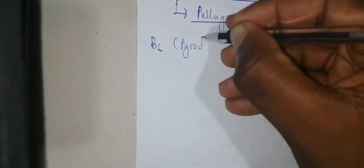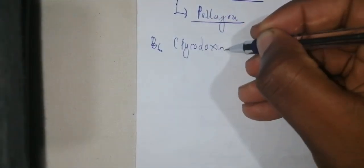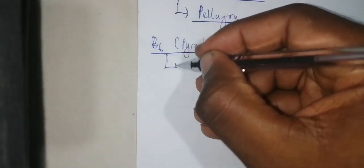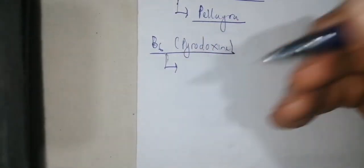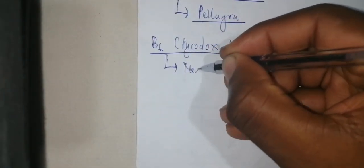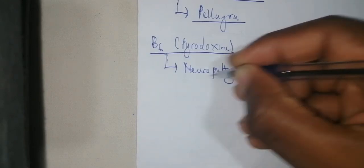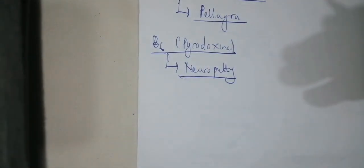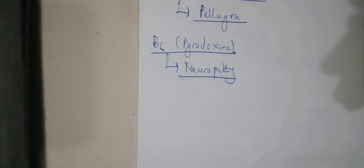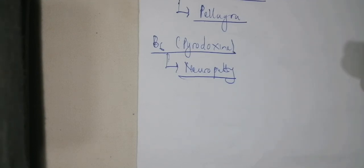The next one is vitamin B6 deficiency, also called pyridoxine. Pyridoxine is involved with neuropathies — when you have a low level of pyridoxine, you have neuropathy. This is why when you take TB medication, particularly isoniazid, you develop peripheral neuropathy, because isoniazid results in vitamin B6 deficiency.